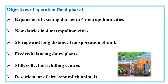The objectives of Operation Flood Phase 1 included: expansion of existing dairies in four metropolitan cities — Calcutta, Delhi, Chennai, and Bombay — where metro dairies had already been established; establishment of new dairies in these four cities; developing storage and long-distance transportation of milk; establishing feeder or balancing dairy plants to provide buffering capacity; establishing milk collection and chilling centers, which play an important role in an organized dairy system; and resettlement of city-kept milk animals — those days many dairy farms within cities were to be shifted and resettled.